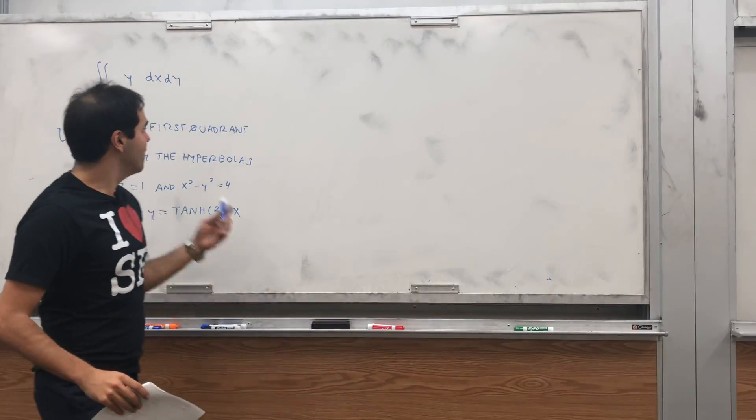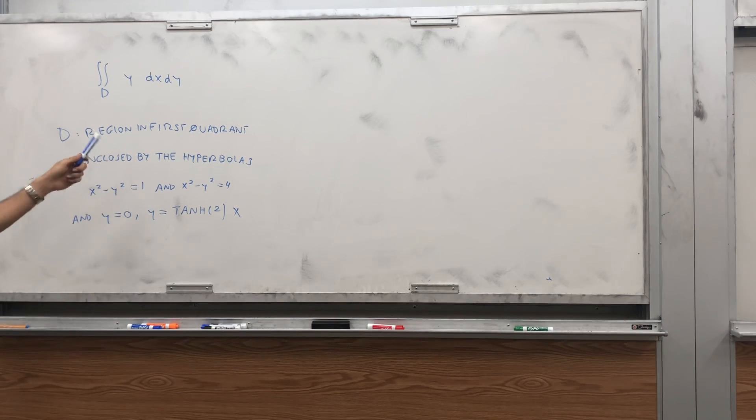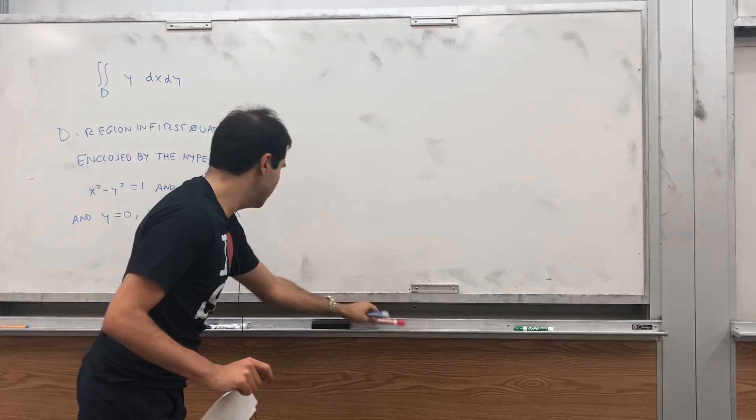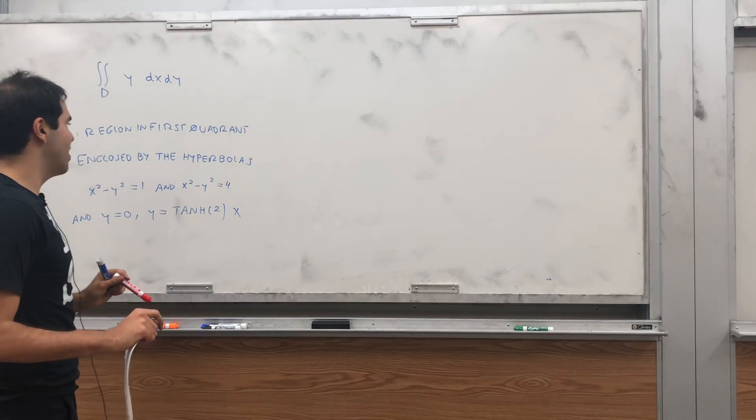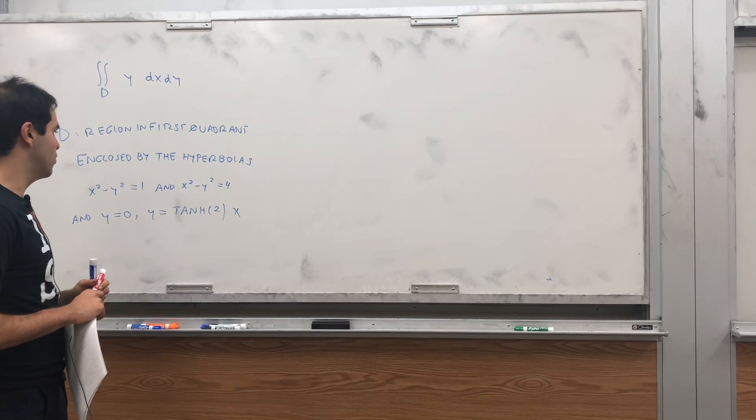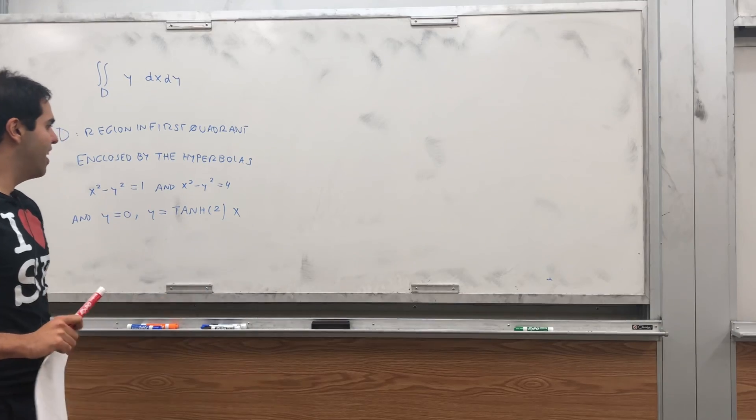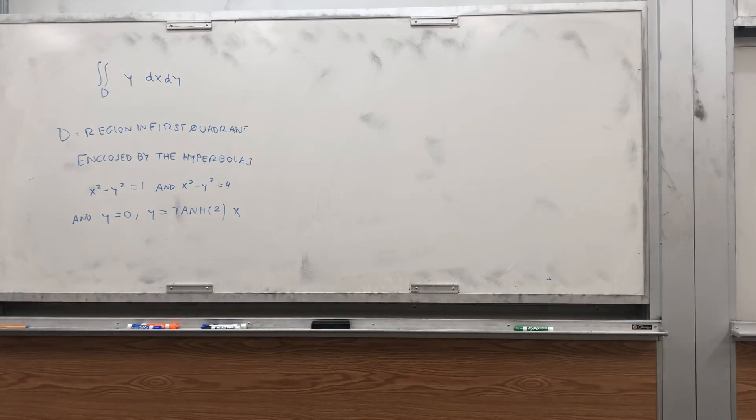So, in particular, today let's calculate the double integral over some region of the function y dx dy, where d is the region in the first quadrant enclosed by the following two hyperbolas: x squared minus y squared equals to 1, and x squared minus y squared equals to 4, and the lines y equals to 0, and y equals to tanh 2 of x.